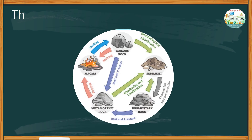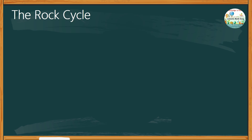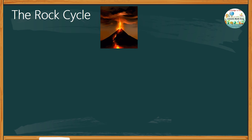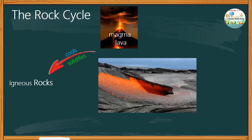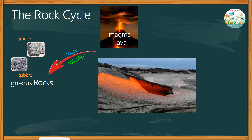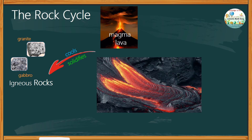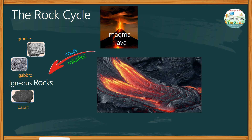Let's create the complete rock cycle using a diagram, starting with the formation of igneous rocks. Igneous rocks are formed when molten rock like magma or lava cools down and solidifies. Some molten rocks cool slowly, forming large crystals like granite and gabbro. Some molten rock cools rapidly, forming small crystals and glassy texture like basalt and obsidian.